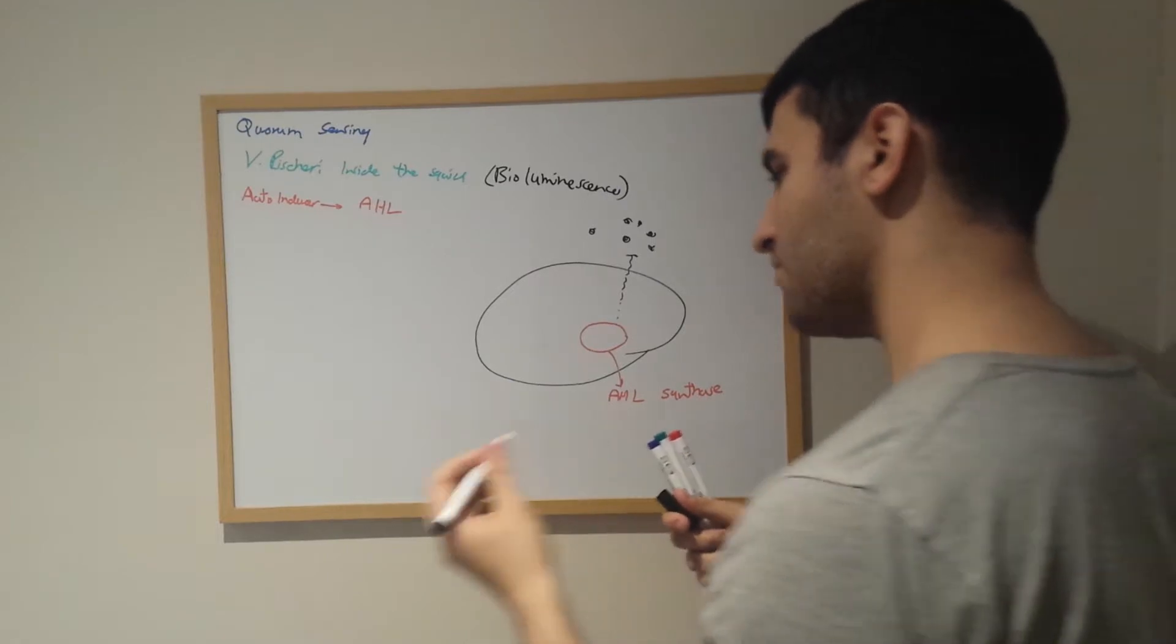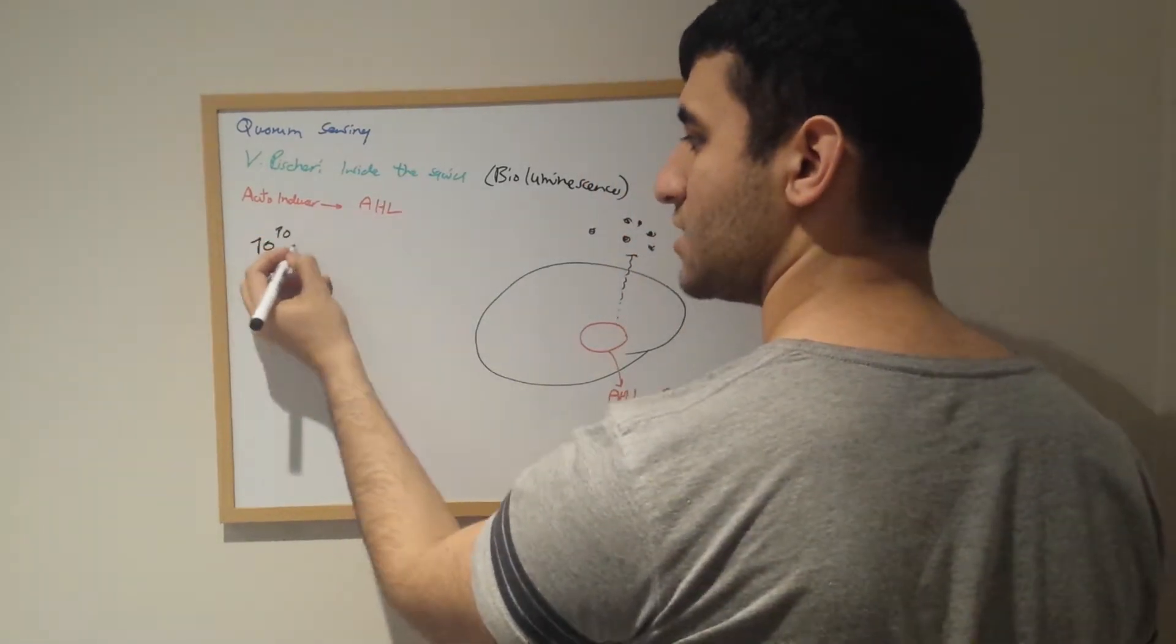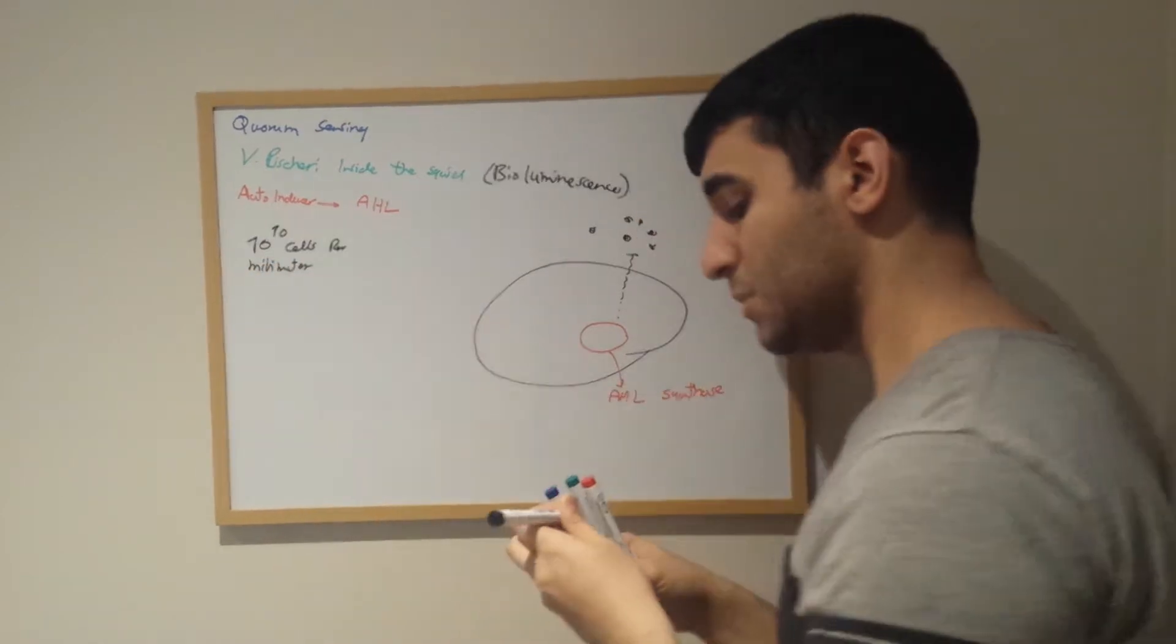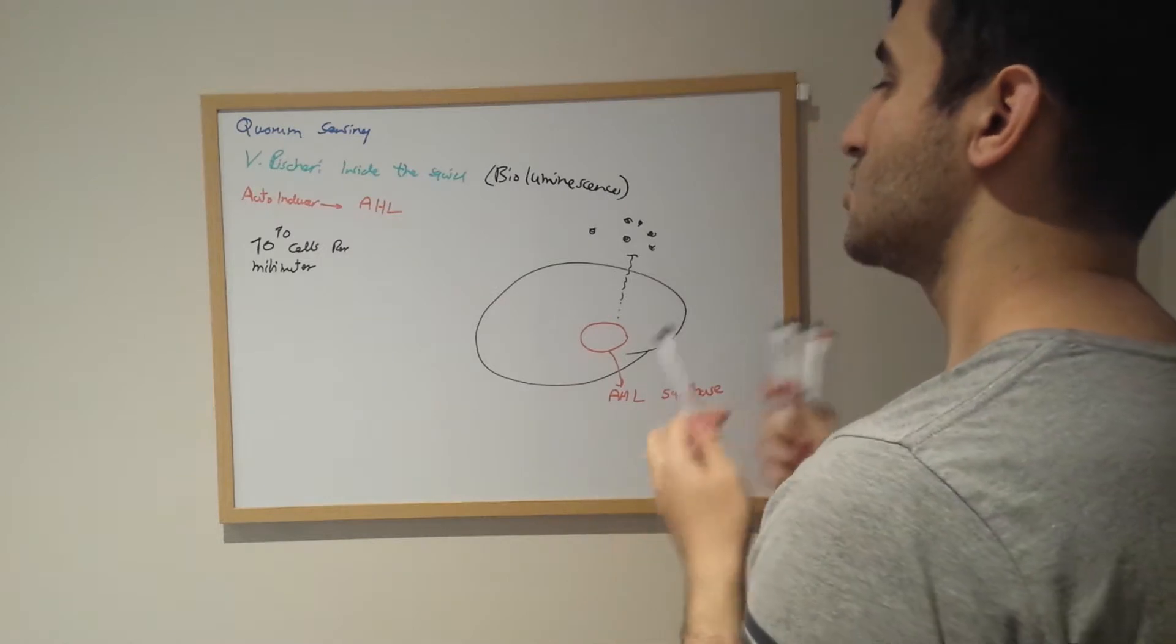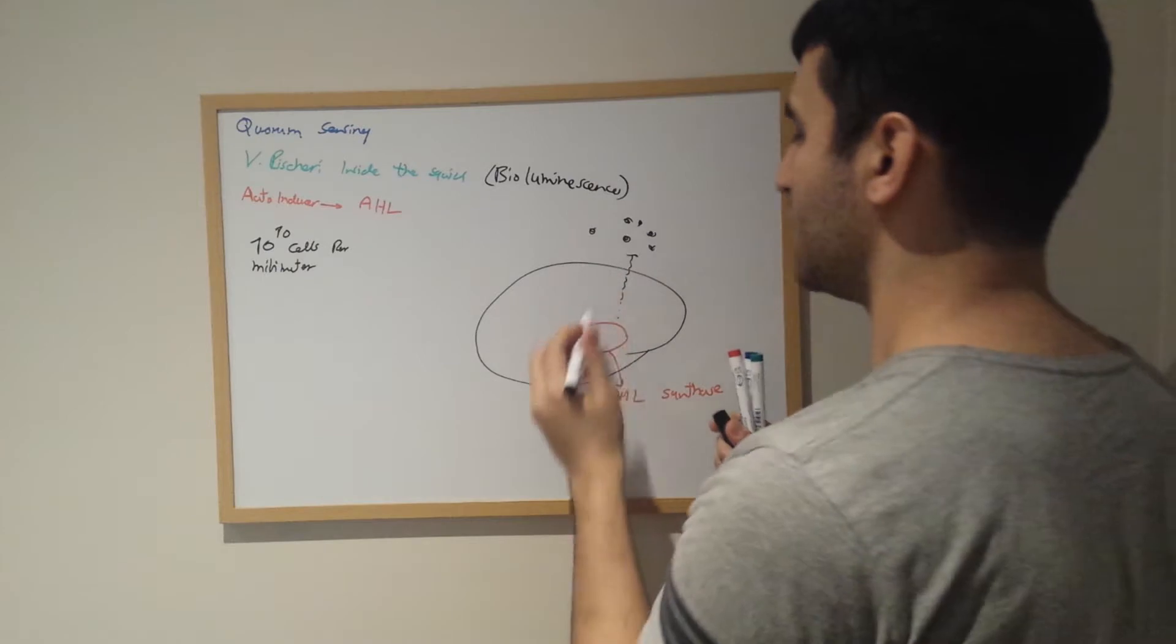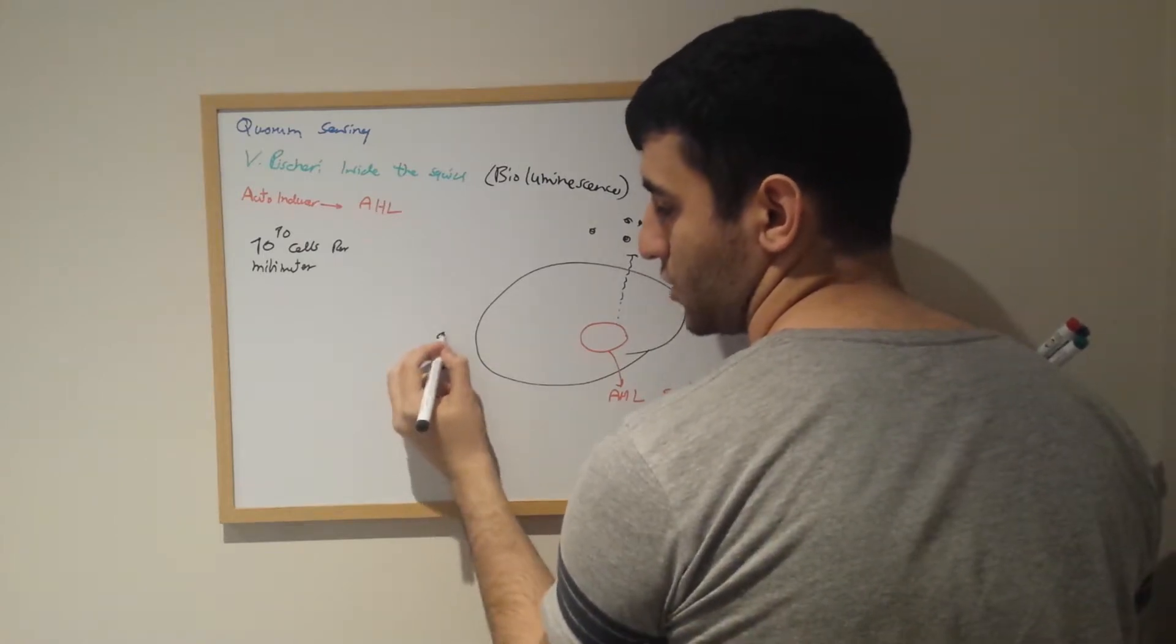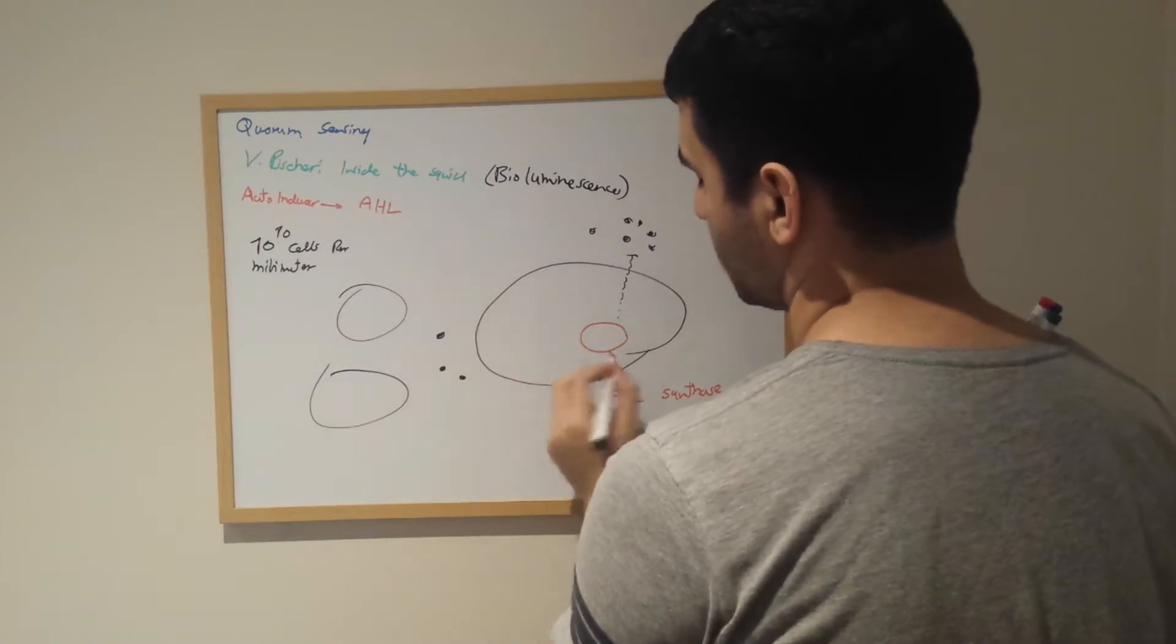If in the case we see 10 to the power of 10 cells per milliliter must be present of V. fischeri in this squid, by that time we no longer have AHL going out of the cell to the outside. We see AHL from here, because there are plenty of cells producing the same thing, so they would go inside the cell.